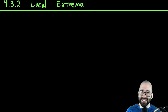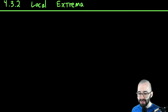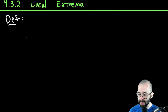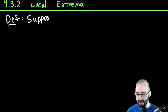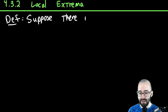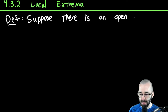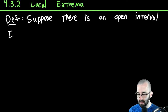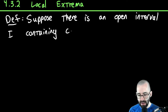Let's talk about local extrema. We'll begin with an example — we can't really talk about local extrema unless we know what it is. So let's suppose there is an open interval — open meaning parentheses — an open interval I containing c, in the domain of f.